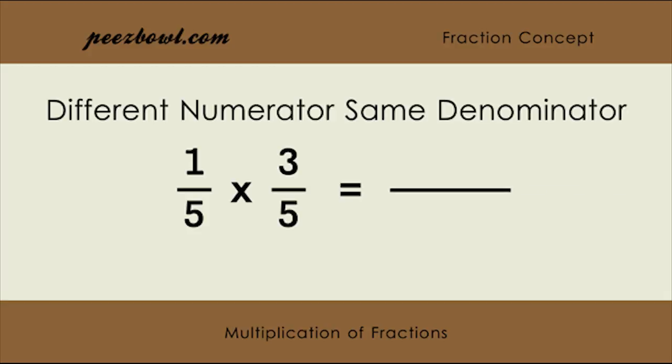Multiply both fractions' numerators to get the final numerator, and multiply both fractions' denominators to get the final denominator. So, the numerator will be 1 multiplied by 3, and the denominator will be 5 multiplied by 5. The result of this multiplication is 3/25.